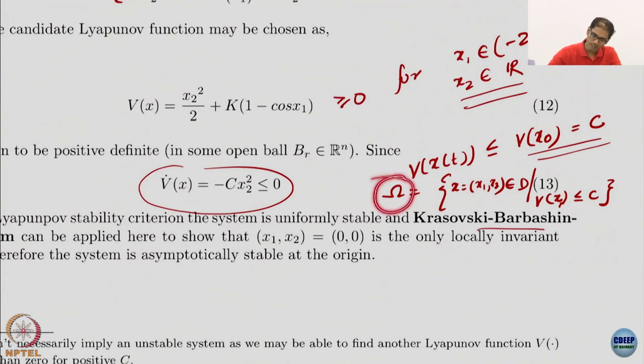So if I define my set as this guy, then this is an invariant set. I hope that is evident to you. Because if I start anywhere in omega, V(x) will be less than equal to c. And if V(x) is less than equal to c, then it will remain less than equal to c for all time. Therefore, I remain in the set omega, because set omega is defined using this. So if I take any point in this set, V will be less than equal to c. And as I propagate it through the dynamical equations, it will remain less than equal to c, which means I am still within this set.